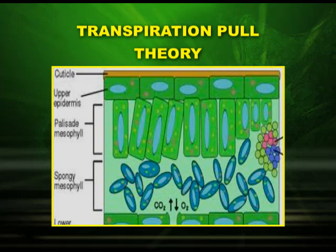Before going into the detail of the transpiration pull theory, it is necessary to have a look at the internal structure of a leaf. In the following diagram, you can see the leaf having an upper epidermis, palisade mesophyll, spongy mesophyll, and the lower stomata which help in the exchange of gases — carbon dioxide and oxygen.